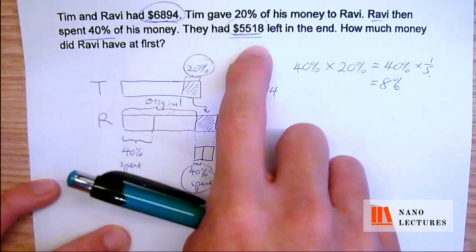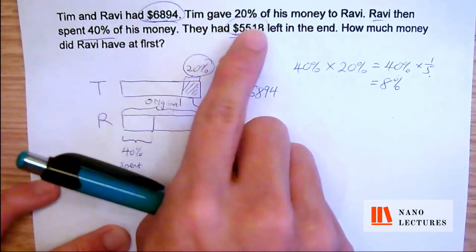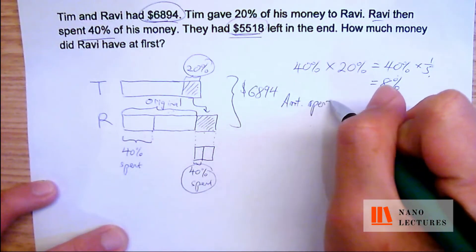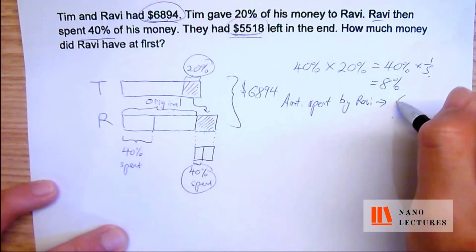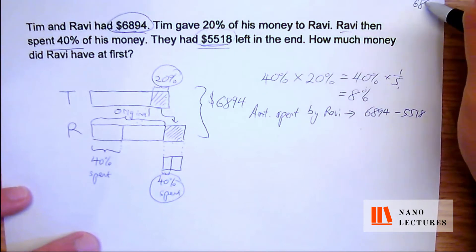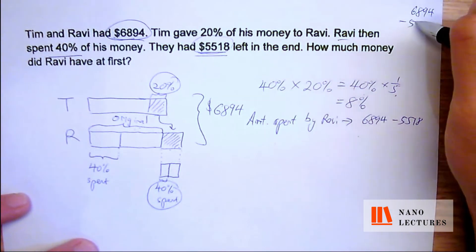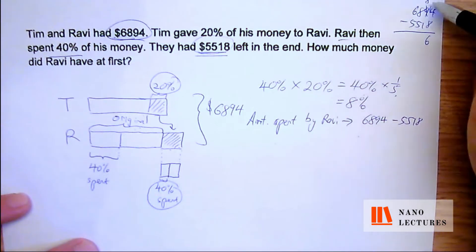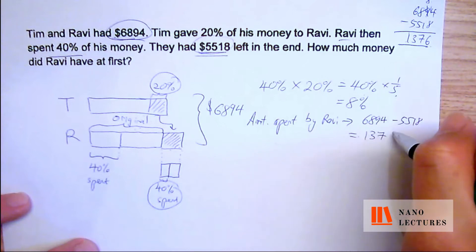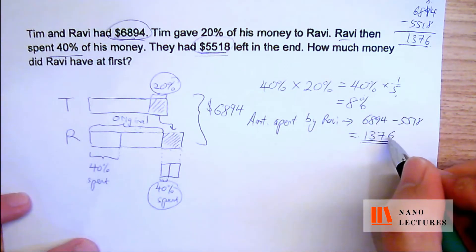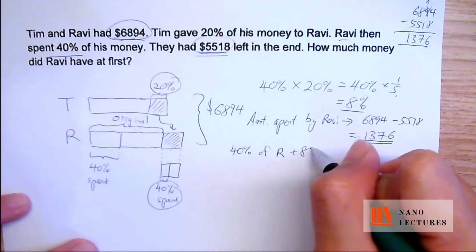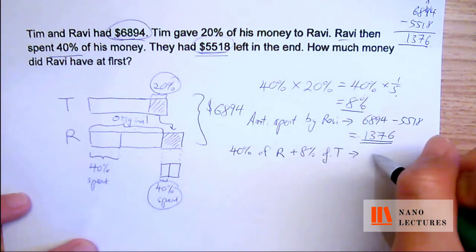So let's find out how much Ravi spent. Amount spent by Ravi: 6,894 minus 5,518. Working this out — borrow one, 14 minus 8 is 6, 8 minus 1 is 7, 8 minus 5 is 3, 6 minus 5 is 1 — giving 1,376. So Ravi spent $1,376, and this $1,376 is represented by 40% of Ravi (R) plus 8% of Tim equals $1,376.